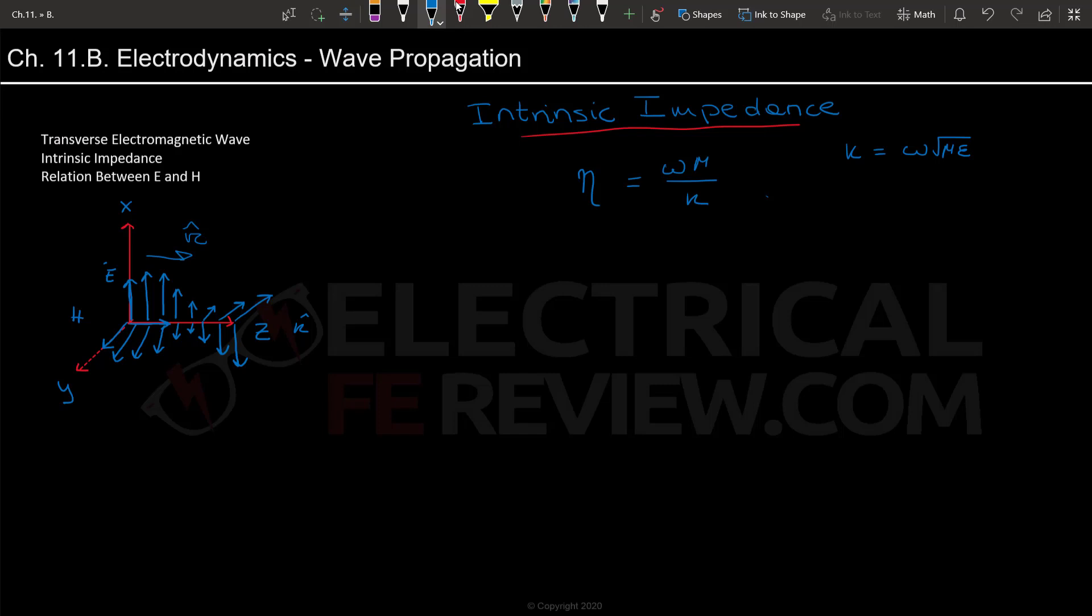What you're going to use is, if you plug in K into this, you'll get that eta is equal to the square root of mu over epsilon in lossless medium. So this is a very important assumption.